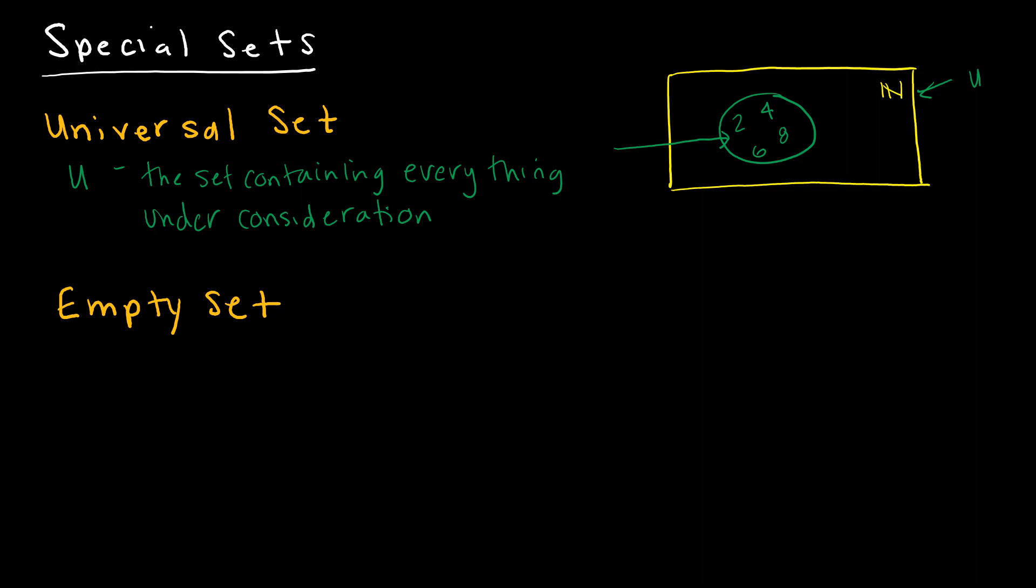The empty set is a set with no elements. We denote that either with the zero with the line through it like this, or you might also see it look like this. But keep in mind that this is not the way we write an empty set, because this is a set containing the empty set, which gets a little bit crazy.